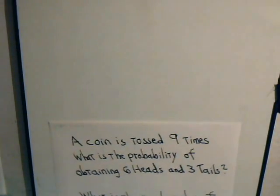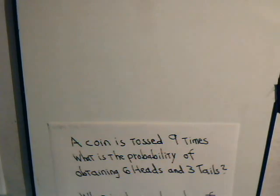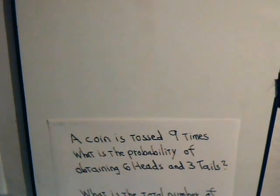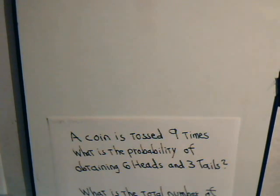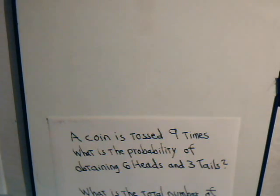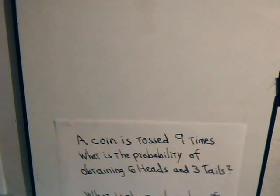Here in this video, we want to consider the problem: a coin is tossed nine times. What is the probability of obtaining six heads? Of course, if you obtain six heads, then by default you also have three tails. Before we solve this problem, let's first consider a simpler problem.